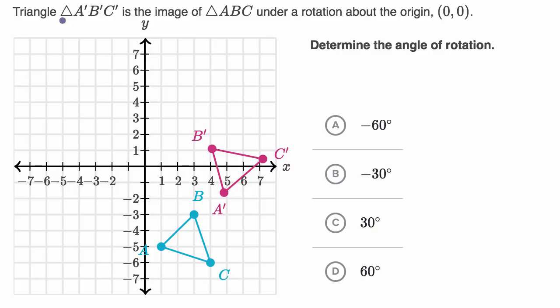We're told that triangle A prime, B prime, C prime, so that's this red triangle over here, is the image of triangle ABC, so that's this blue triangle here, under rotation about the origin. So we're rotating about the origin here. Determine the angle of rotation.